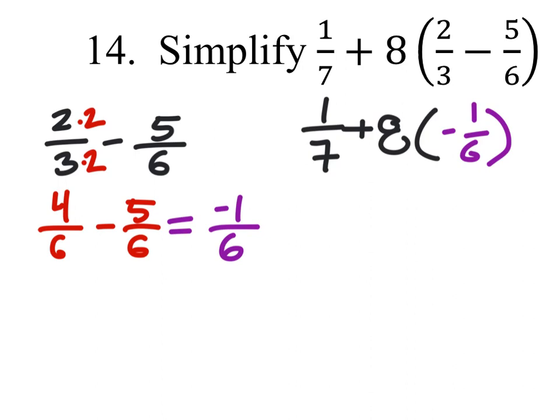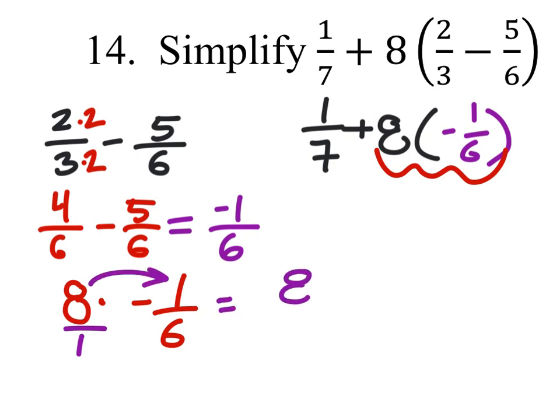So now what we're going to do is look just at the multiplication portion of this: 8 times negative 1/6. Well, if you want to look at it as 8 over 1, that's fine. 8 times the 1 gives us 8, and then 1 times 6 gives us 6. There was a negative though, and there's one negative. 1 is odd, so we know the answer is negative. And this can be simplified as well if we divide both by 2. So that's negative 4/3.